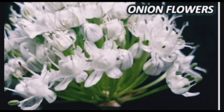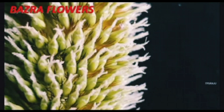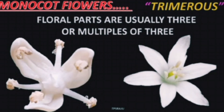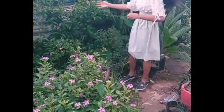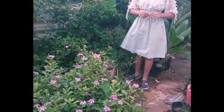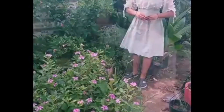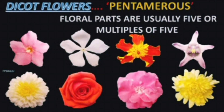Onion flowers are small, white, and born in groups. Crops like bajra flowers are also small and born in groups. Coconut flowers share the same features. Monocot flowers are trimerous — floral parts are usually three or multiples of three. Dicot flowers are colorful, large in size, born singly, and with a petiole. Dicot flowers are pentamerous — floral parts are usually five or multiples of five.